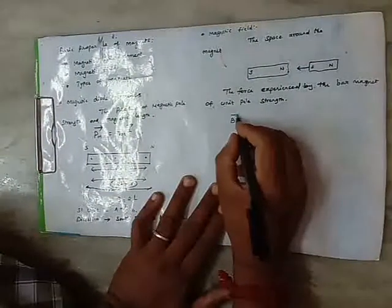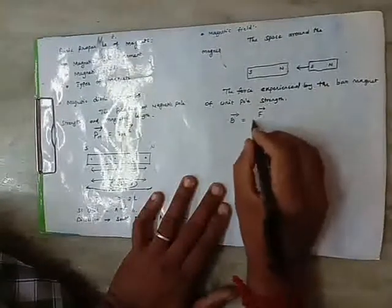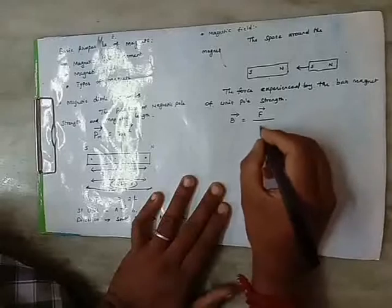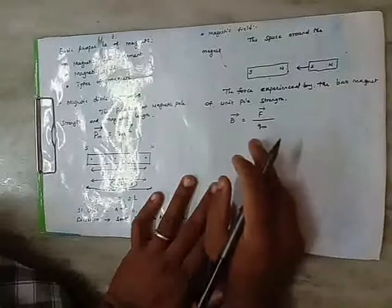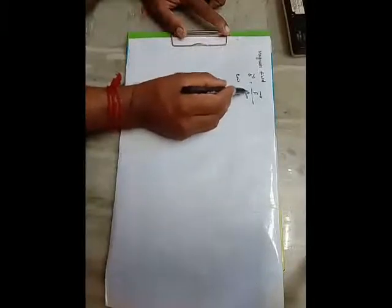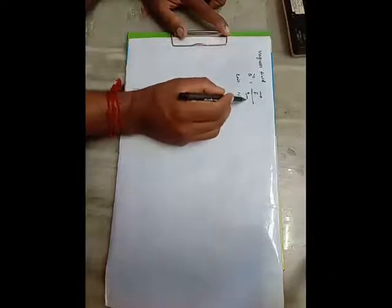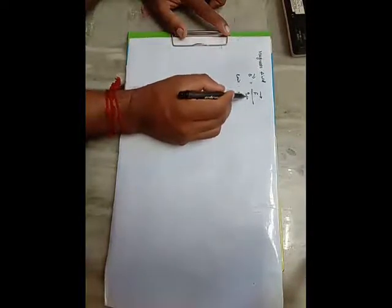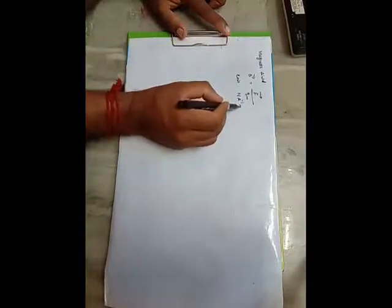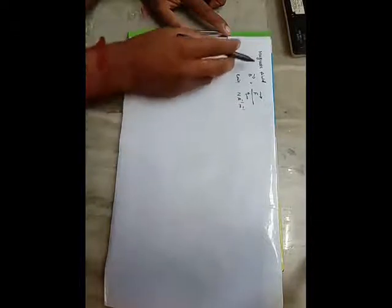The magnetic field is noted by B vector. In equation, it can be written as: B vector is equal to F vector divided by QM. It is a vector quantity. The force has a unit of Newton, and QM, the magnetic pole strength, has a unit of Ampere meter. So the unit for the magnetic field is Newton Ampere inverse Meter inverse.